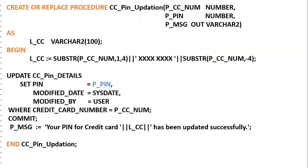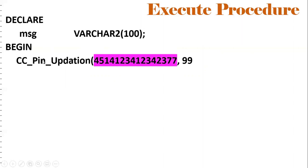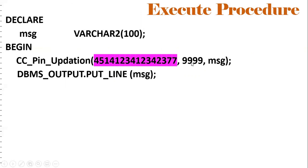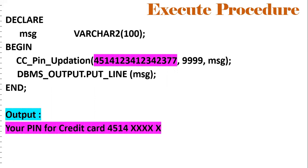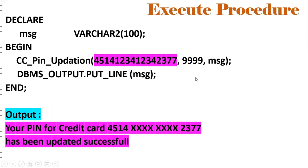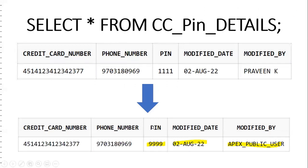Now we want to execute the procedure. We can execute it using an anonymous block: DECLARE one variable MSG; BEGIN — call the procedure with the credit card number and PIN as parameters; DBMS_OUTPUT.PUT_LINE(MSG); END. The output will be: 'Your PIN for credit card 4544XXXX2377 has been updated successfully' — showing the first four and last four digits with the remaining characters as 'XX'.